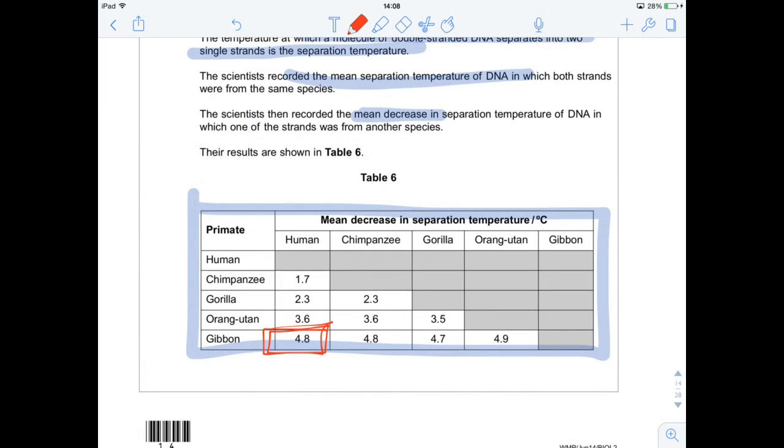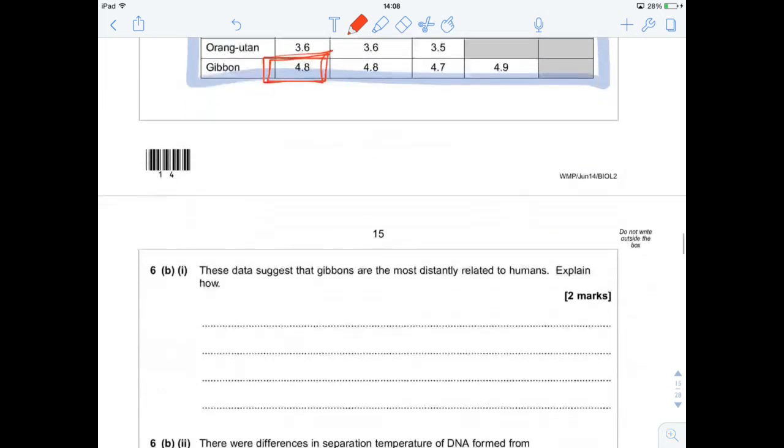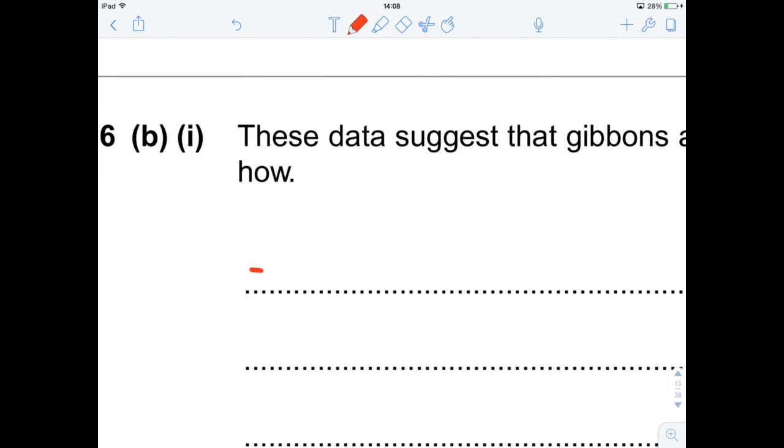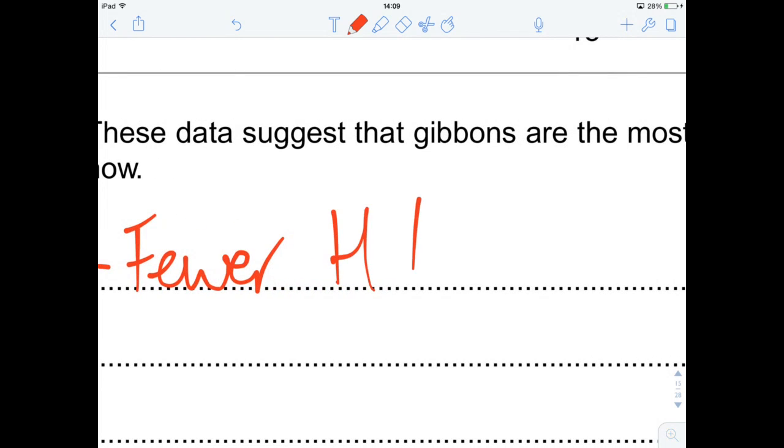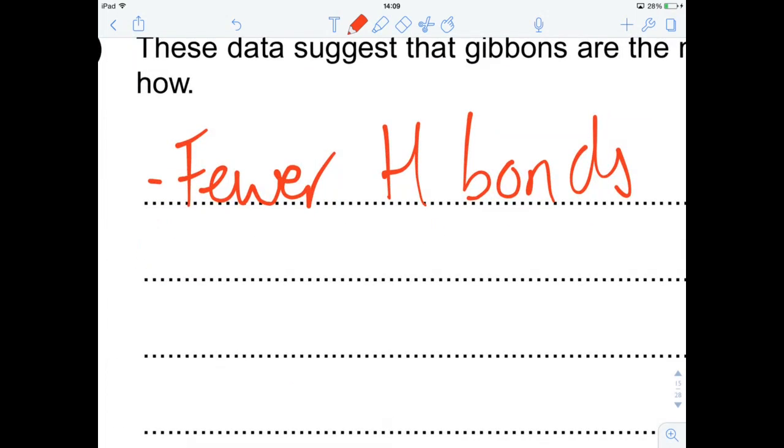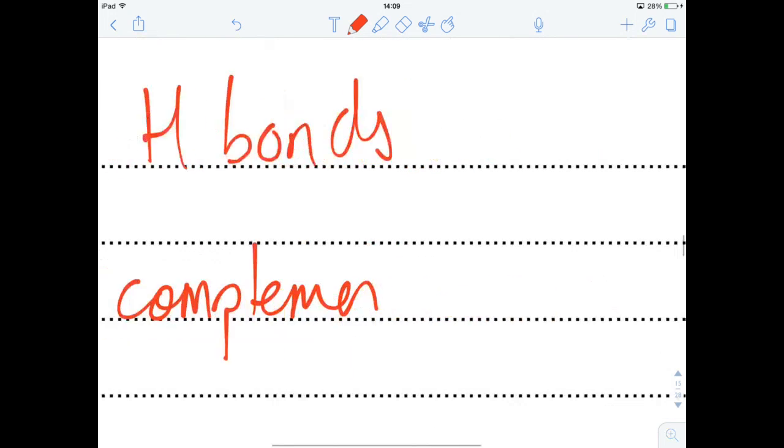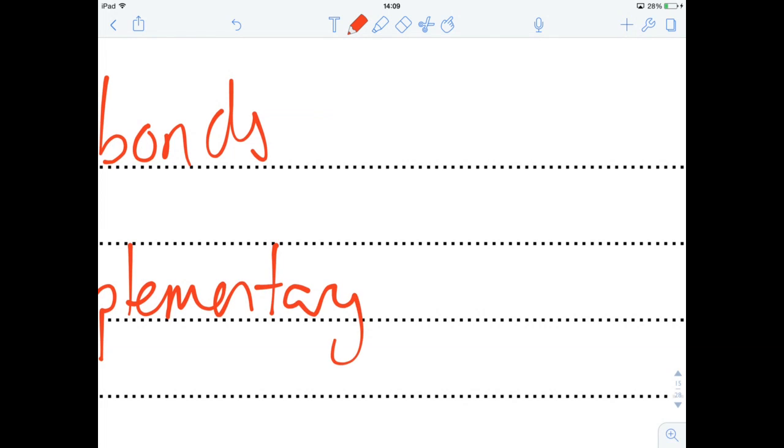Which means they are less and less related. You don't actually get a mark for saying that is the biggest decrease in temperature. You have to explain it a bit more. So there must be fewer hydrogen bonds in the hybrid strand. And therefore, that means that there must be fewer complementary base pairs.